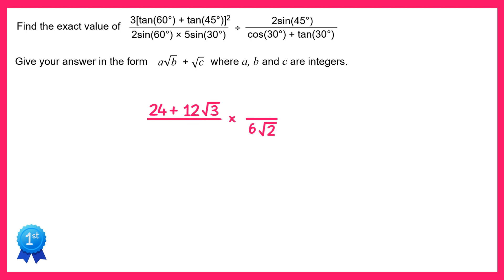So you're just left with this over 6 root 2. Now there's a common factor of 6 we can cancel out from all of these terms here, so we end up with 4 plus 2 root 3 over root 2.